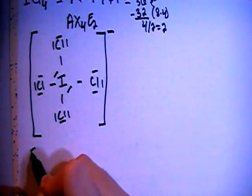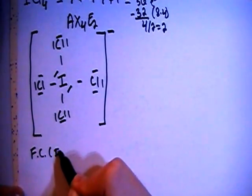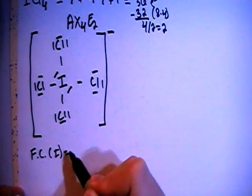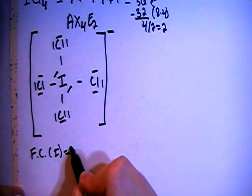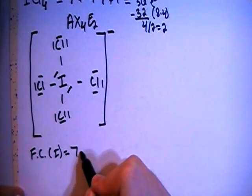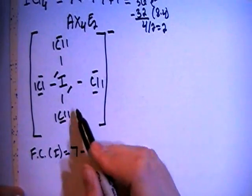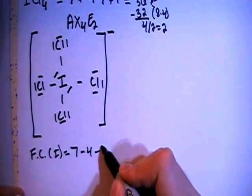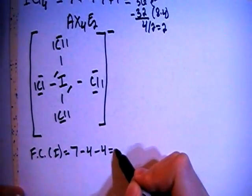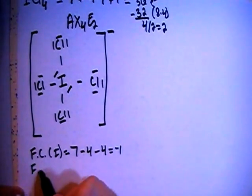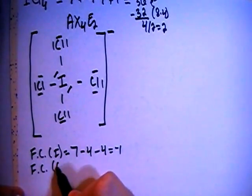So the formal charge of the central iodine is going to be equal to the 7 valence electrons brought in minus 1, 2, 3, 4 bonds minus 1, 2, 3, 4 non-bonding electrons for a formal charge of negative 1.